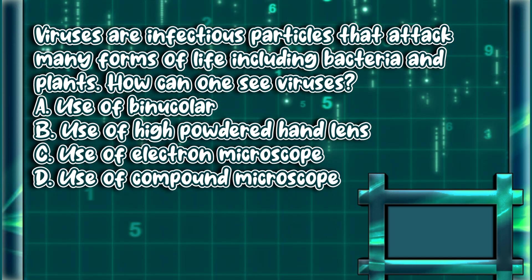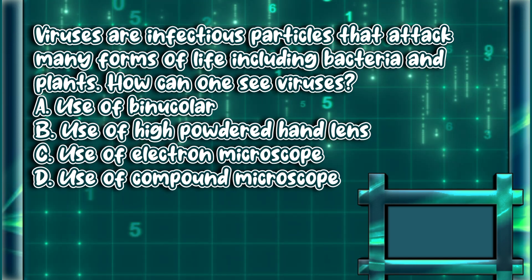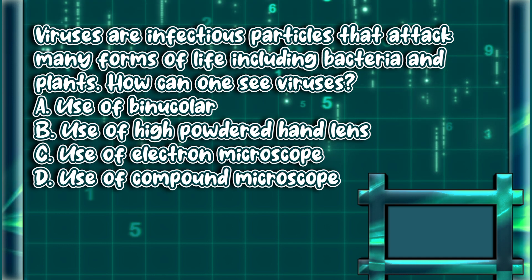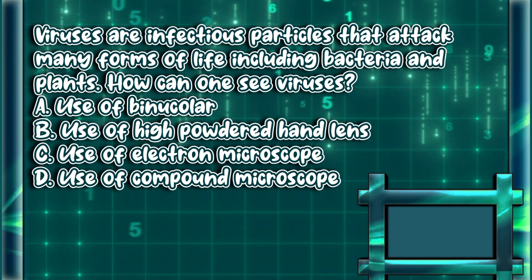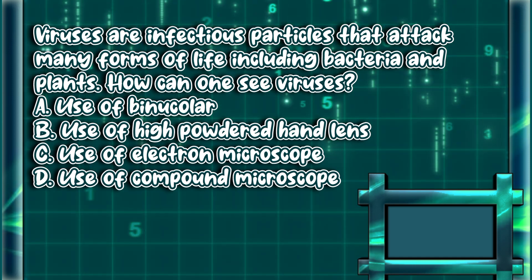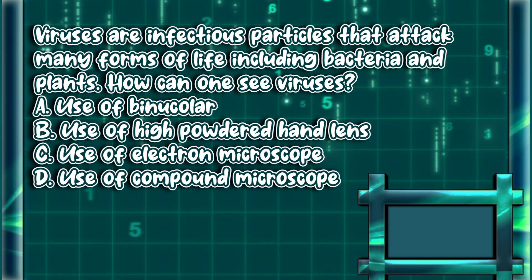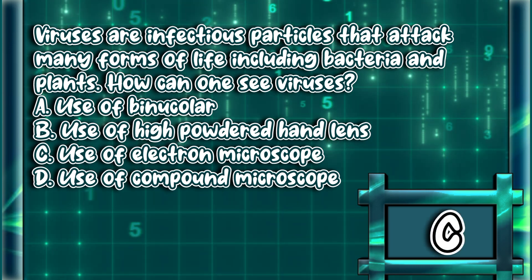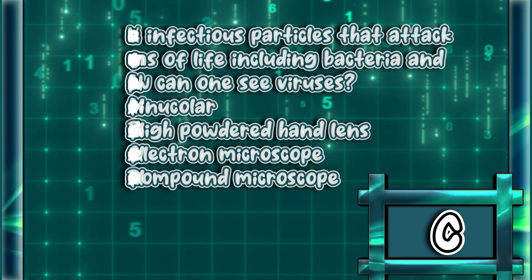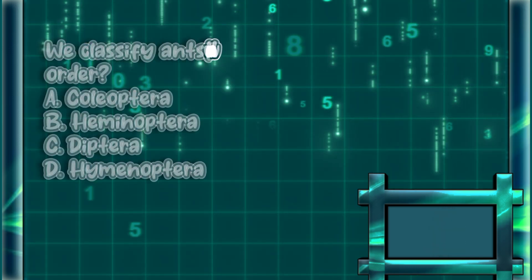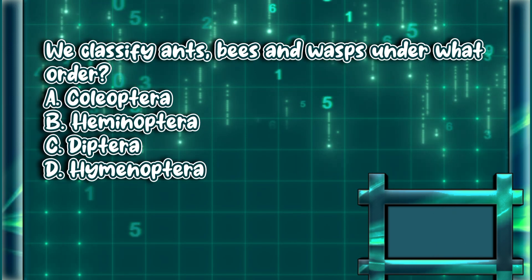Viruses are infectious particles that attack many forms of life including bacteria and plants. How can one see viruses? A) use of binocular, B) use of high-powered hand lens, C) use of electron microscope, D) use of compound microscope. The answer is letter C.